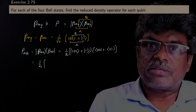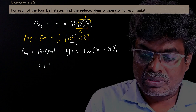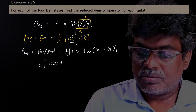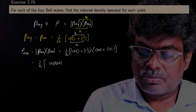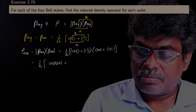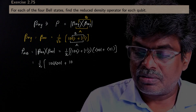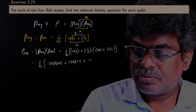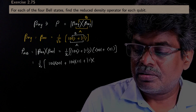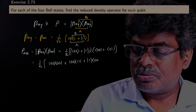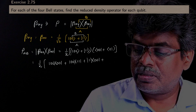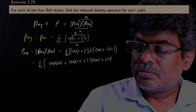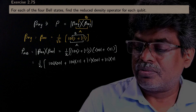Finally, you get (1/2) times: |00⟩⟨00| + |00⟩⟨11| + |11⟩⟨00| + |11⟩⟨11|. This is the composite system density operator corresponding to the two qubits.